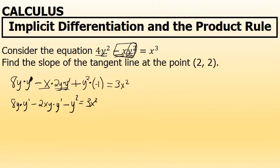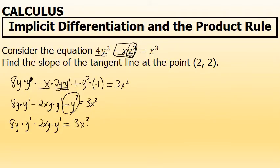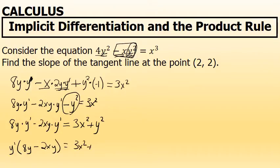To solve for y prime, I'm going to keep the two terms that involve y prime on the left side of the equation and move the term negative y squared, which does not involve a y prime factor, to the right side. That means adding y squared to both sides. After adding y squared to both sides, I'll factor y prime out to the front, giving the form: y prime times the quantity (8y minus 2xy) equals 3x² plus y².